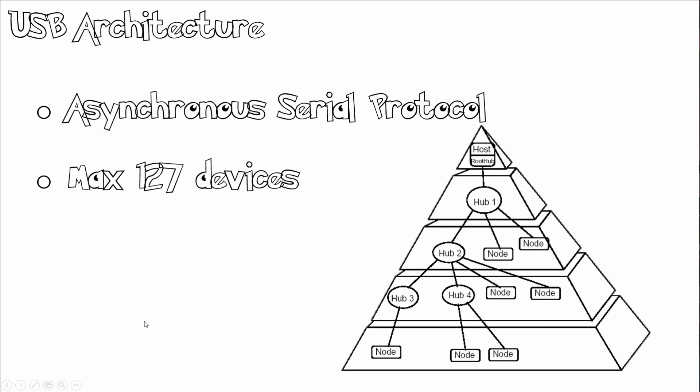Let's take a look at the USB architecture. USB is an asynchronous serial protocol, which means there's no dedicated clock line. The USB system is made up of hosts, a multiple number of USB ports, and multiple peripheral devices connected to a tiered star topology. USB hubs can be included in the tiers, allowing for branching into tree structures with up to five tier levels.